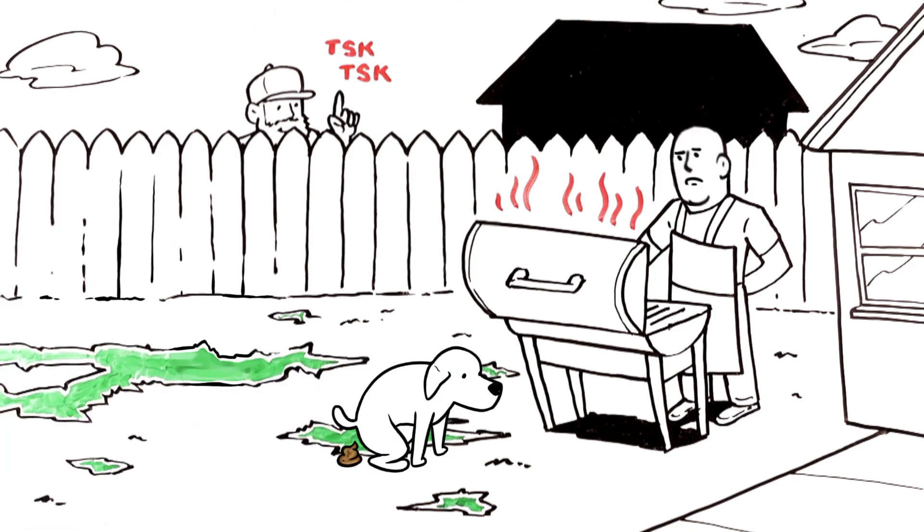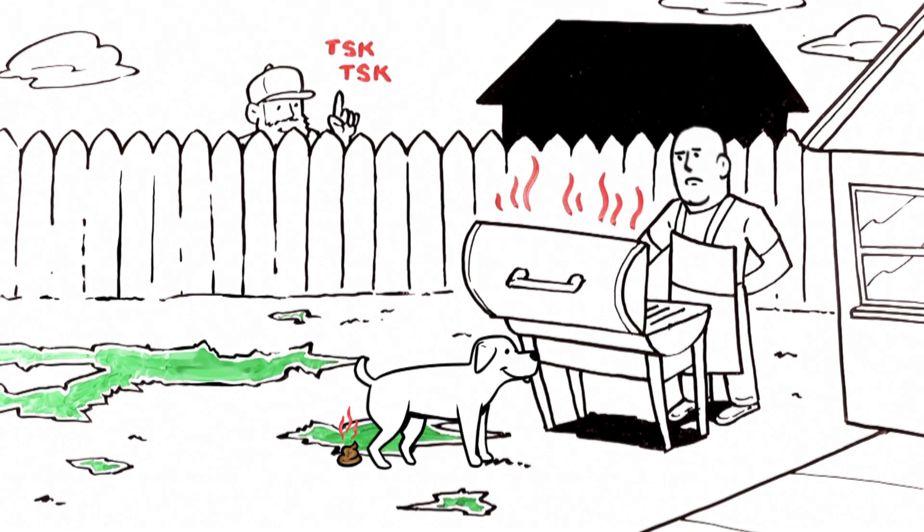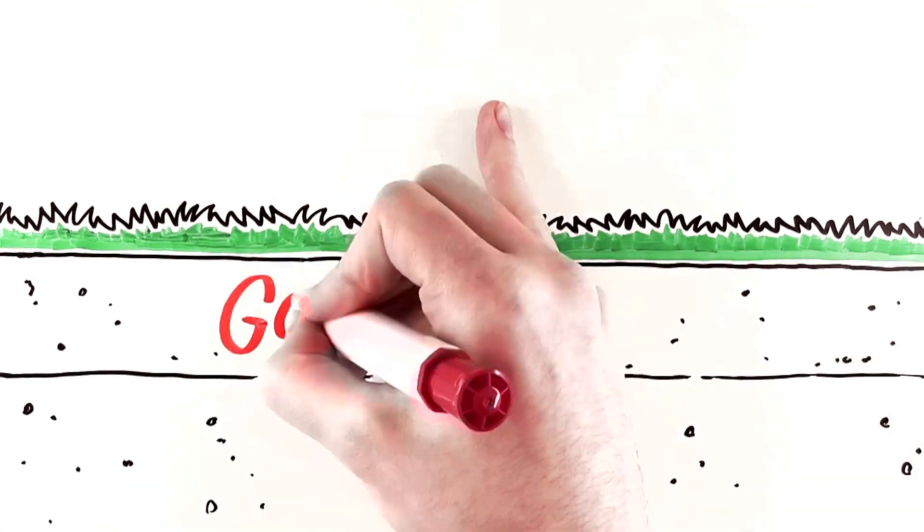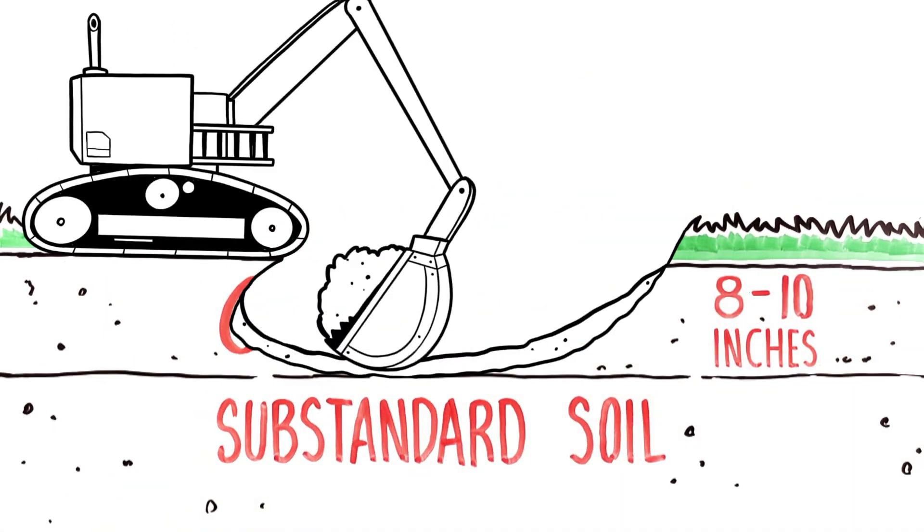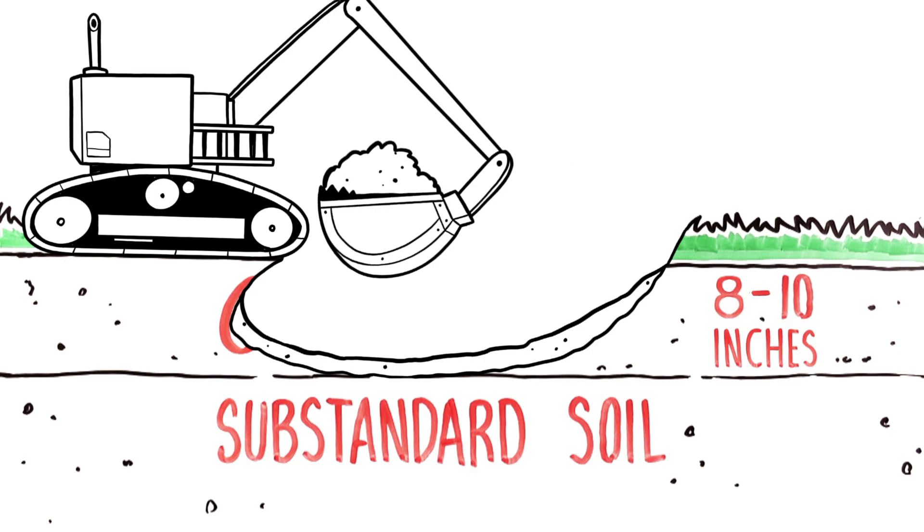There's only one thing it's good for now. But hey, it's not your fault. Current development practices scrape 8 to 10 inches of fertile topsoil away, leaving you with substandard soil.